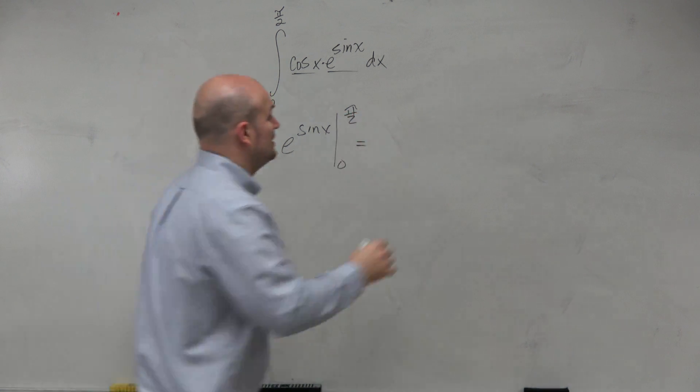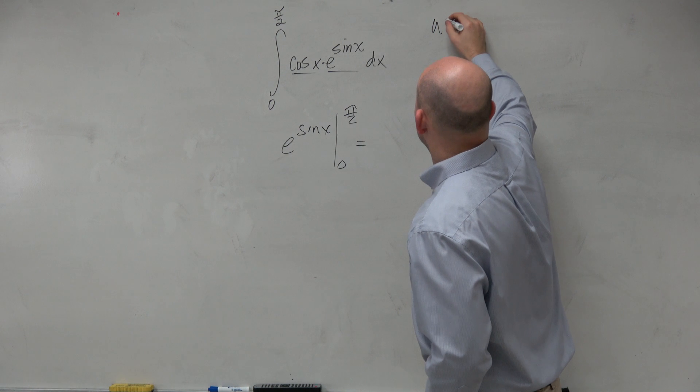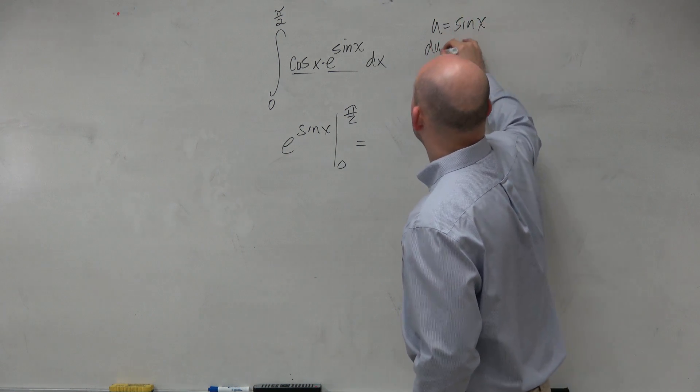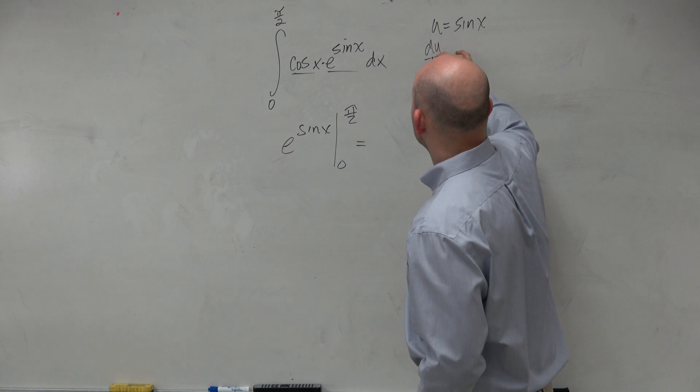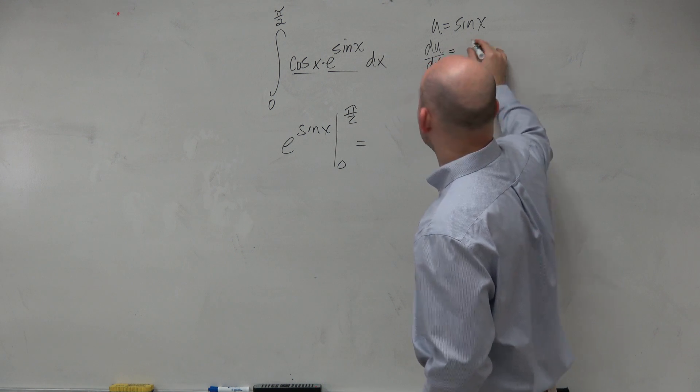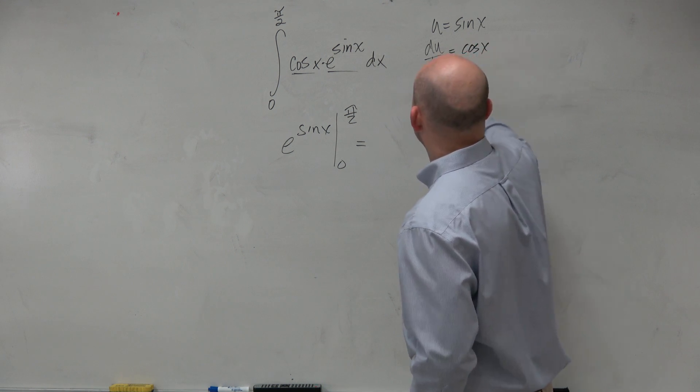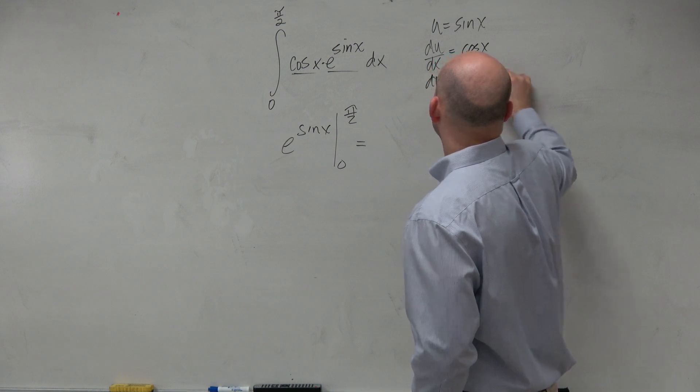Now again, if you don't see it, let's go and look at u substitution. u would equal sine of x. du over dx, derivative with respect to x, would be cosine of x. That means du would equal cosine of x dx.